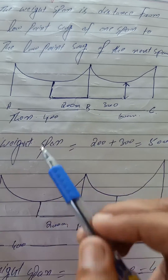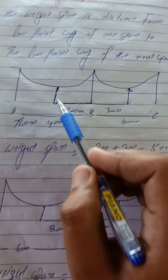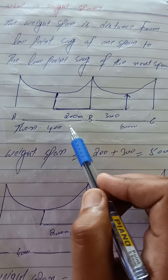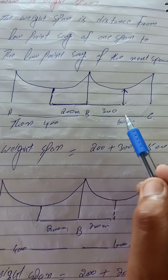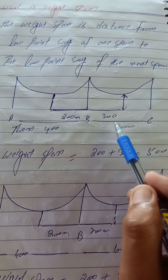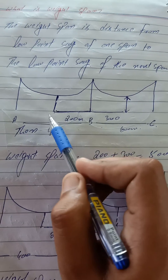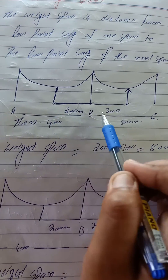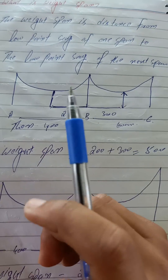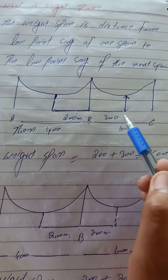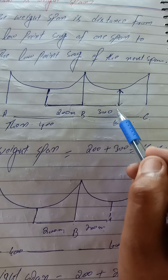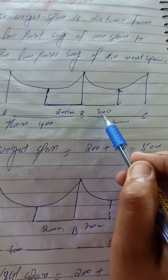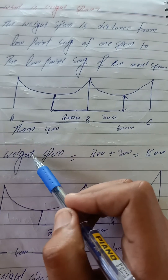We have to calculate the distance from the low-point sag of one span to the low-point sag of the next span. For example, the lowest point of the sag of span A–B is at a distance of 100 meters from A. And for the next span, the lowest point of the sag has a distance of 300 meters from B.